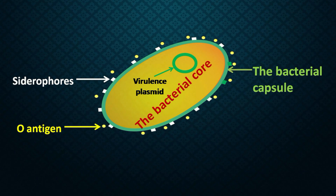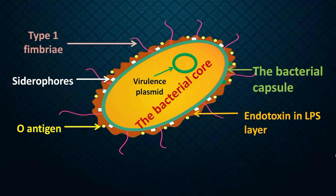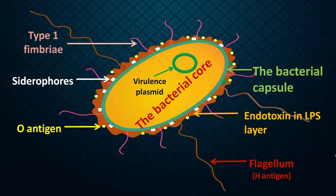On the capsule it also has an O antigen, which we will talk about shortly. Over this capsule the bacteria secretes what is called endotoxin — lipopolysaccharide layer — and this lipopolysaccharide layer has a very strong capability to generate a response in the human body. The bacteria also has some brushy strings coming out of the bacterial surface called fimbria, and a long tail which is called flagella. That is how the E. coli looks.